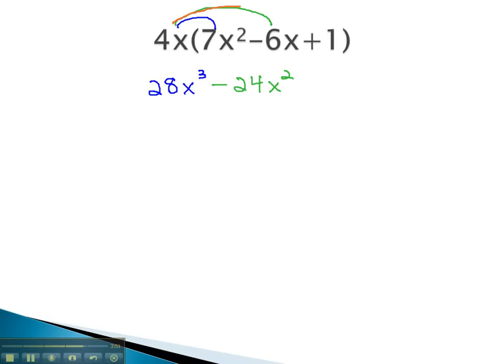Finish by multiplying the 4x times the 1. 4x times 1 is 4x, and that will complete our problem. Again, we are not allowed to combine the 28, negative 24, and 4 because they are not like terms. The variables do not have matching exponents. This will complete our problem.